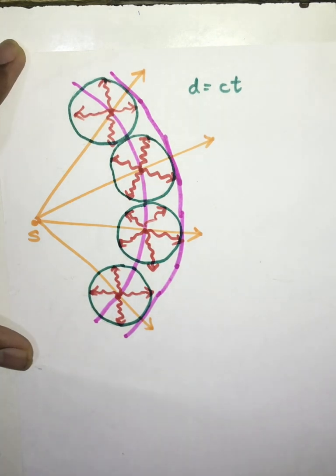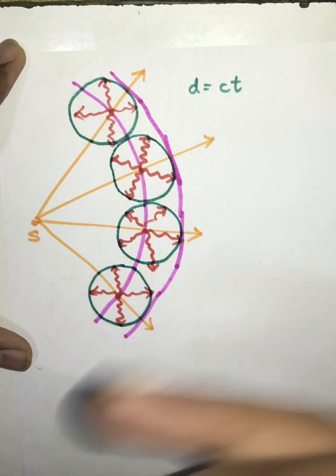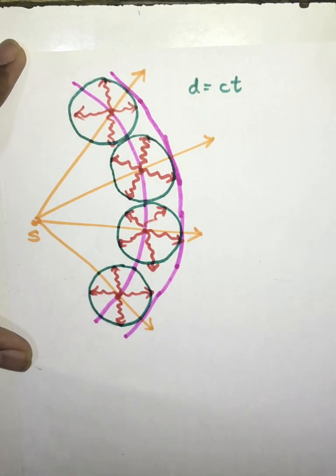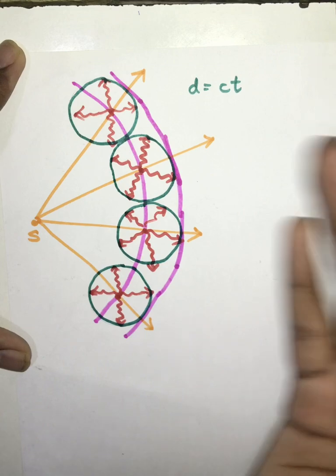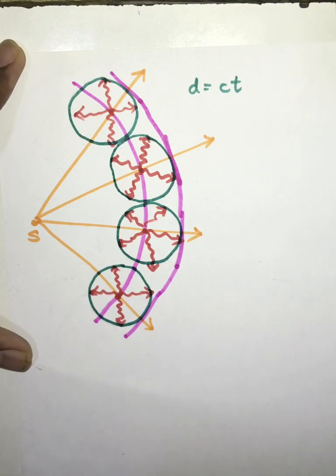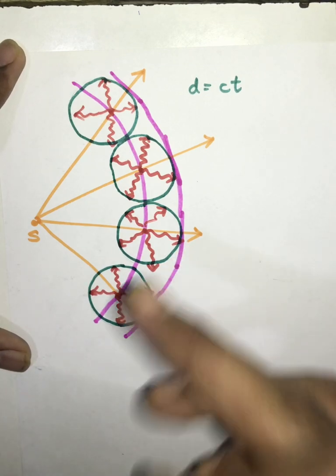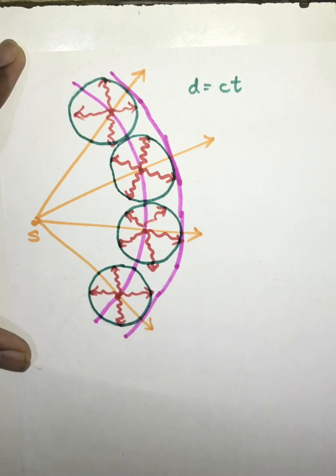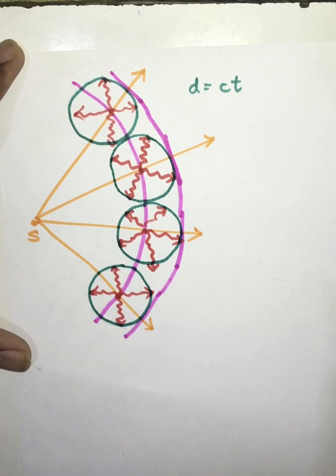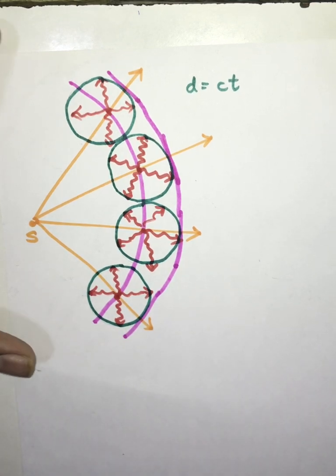In this way we can further construct all possible secondary, tertiary wavefronts and so on. This is all about the spherical wavefront, and now we will see what is a plane wavefront.